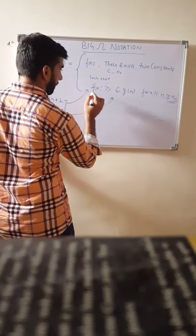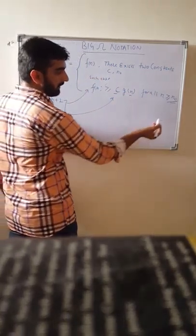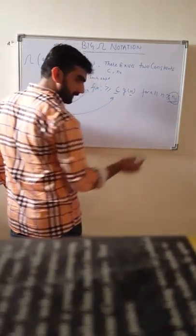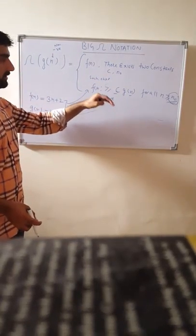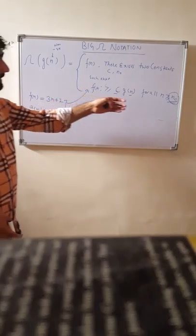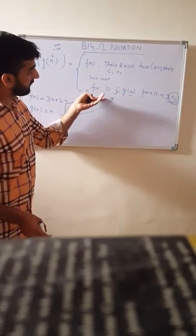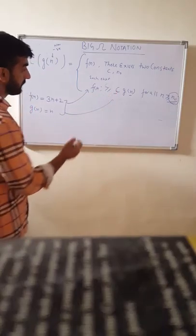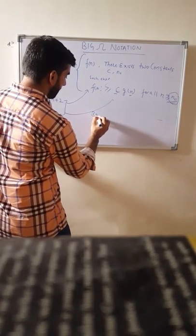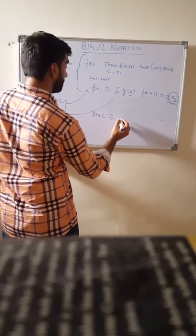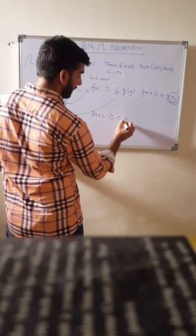If we have to find the Big Omega for these two expressions, we need to find the values of C and n₀. Remember, n₀ is the value of n at or after which the statement holds true. So we need: F(n) = 3n + 2 ≥ C·G(n) = C·n.